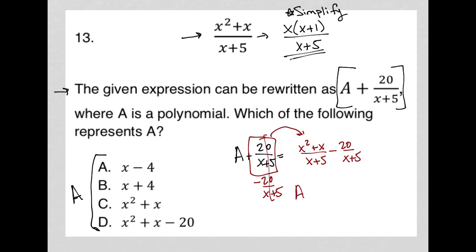So that leaves me with A is equal to—I have a common denominator for both, so I can combine the two fractions into a single fraction. I have x squared plus x minus 20 over x plus 5. Is that it? So that's my A. Well, I don't have that as an answer.